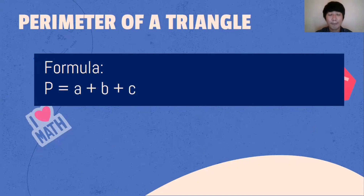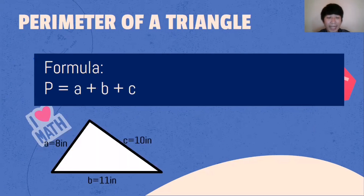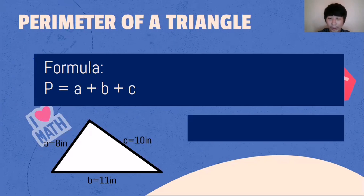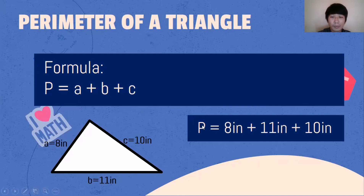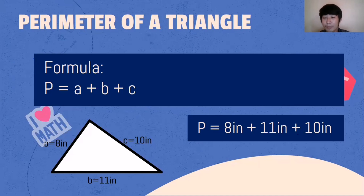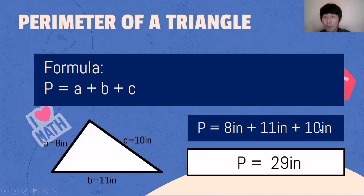For another example using the same formula A + B + C: A is 8 inches, B is 11 inches, C is 10 inches. We substitute the values into the formula and add all the sides. 8 plus 11 is 19, plus 10 is 29 inches. As simple as that — for the perimeter of a triangle, just add side A, side B, and side C.